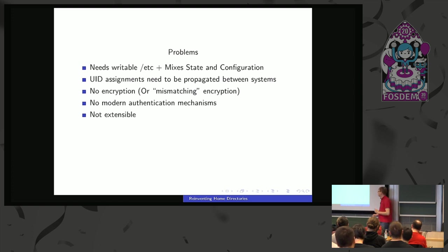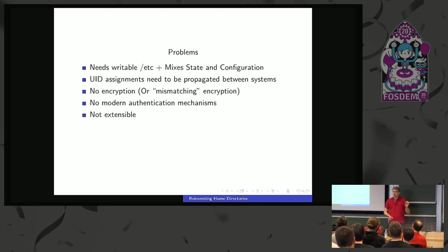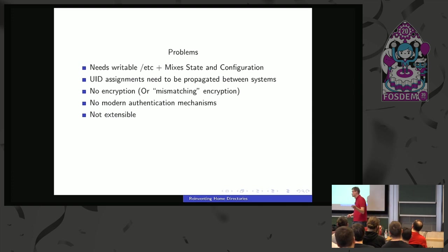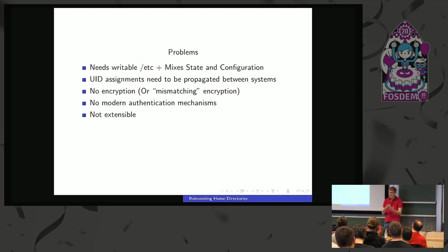It's also not extensible — and this is a big one. Right now, struct passwd is defined the same way as it was in 1985. It has these fields: username, user ID, group ID, real name, home directory, and shell — okay, that's six. Beyond that, you don't get anything. You can't add a field there.